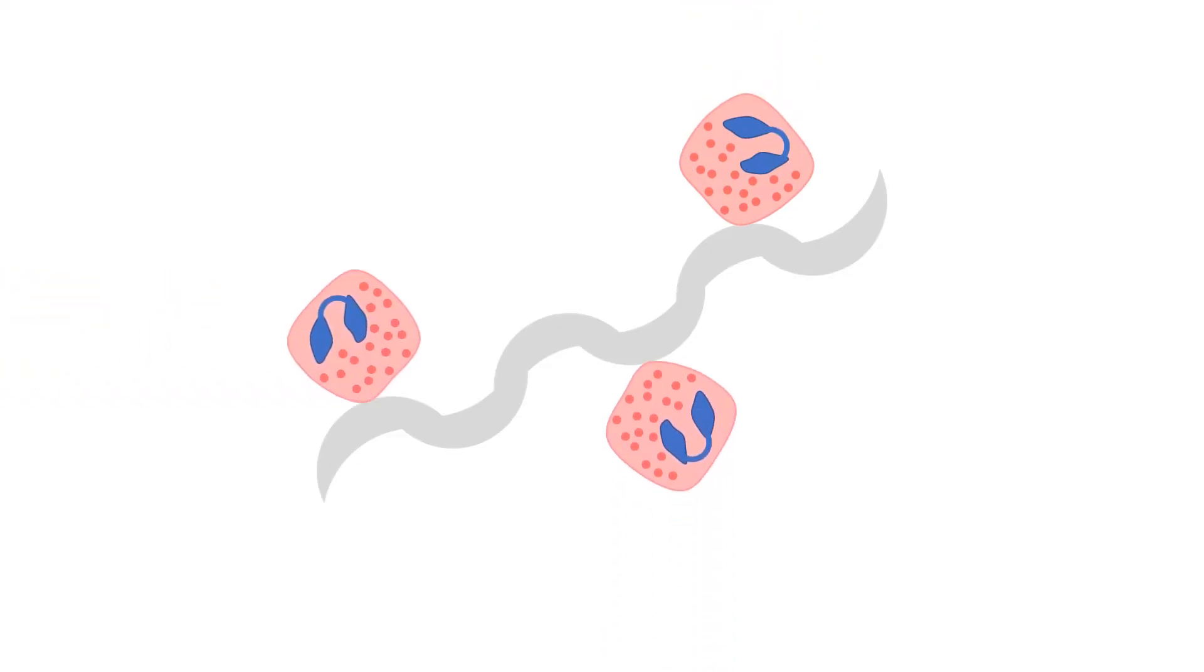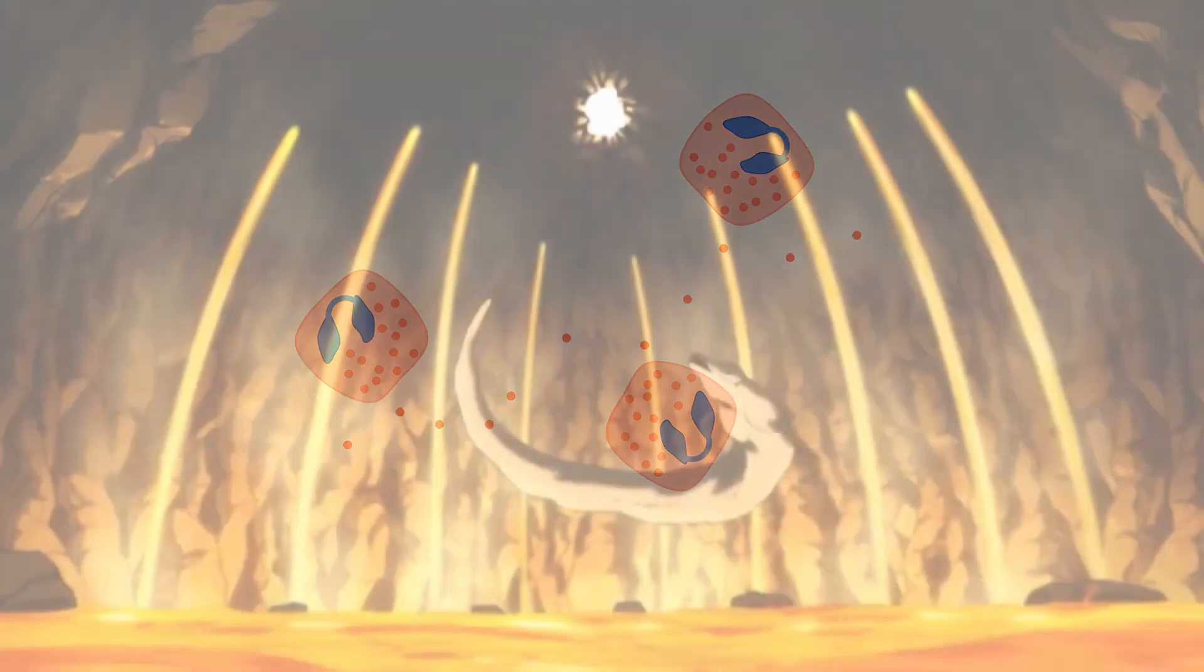Instead, eosinophils target parasites with their receptors, and release their granules into the parasite. These granules contain major basic protein, a toxin effective against helminth parasites, the worm-like subclass of parasites which anisakis belongs to. Effectively killing them, and averting the threat once more.